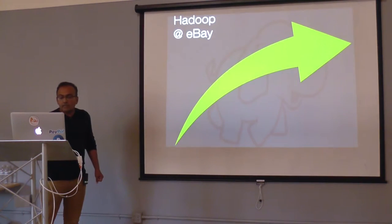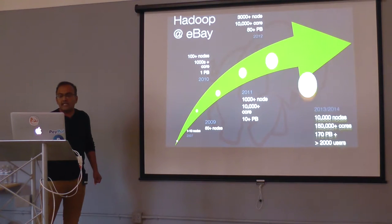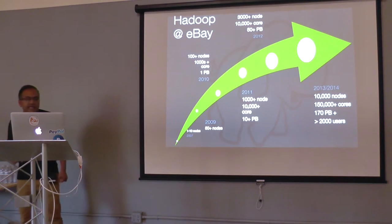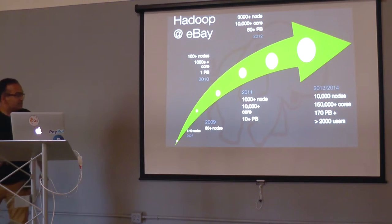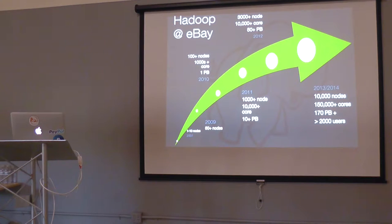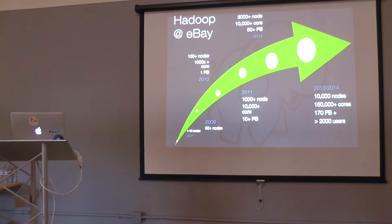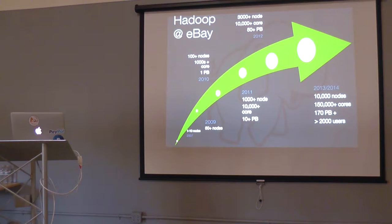A little bit about the Hadoop environment at eBay: we started in 2007 with a nice 10-node cluster. We have grown a lot from there — today we have 10,000 nodes, more than 150,000 cores, 170-plus petabytes of data, and 2,000 users on the Hadoop systems.